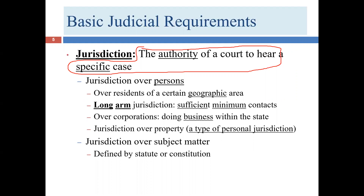There are lots of different types of jurisdiction, and we're going to cover several of them — not all, but the two big ones are jurisdiction over persons, usually called personal jurisdiction, and jurisdiction over subject matter, usually called subject matter jurisdiction. These are the number one and number two types; there are several others, but these are probably the most important.